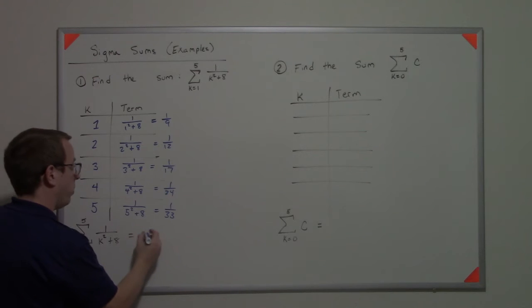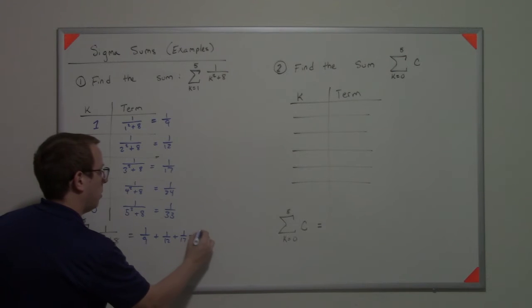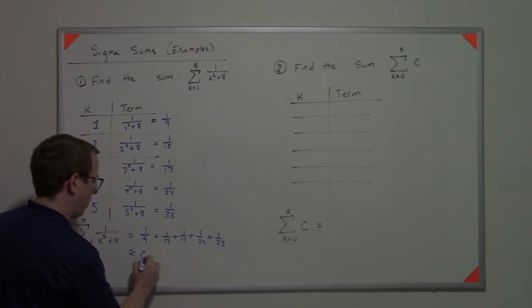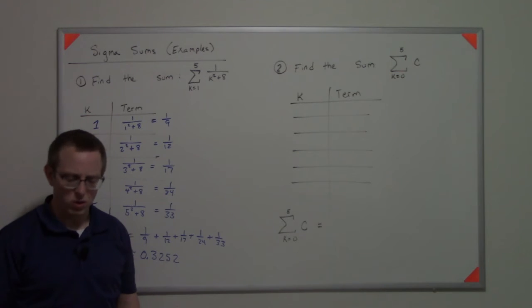So we would say this is equal to one ninth plus one twelfth plus one seventeenth plus one twenty-fourth plus one thirty-third, which I believe is like three two five two something like that. It's hard to say.